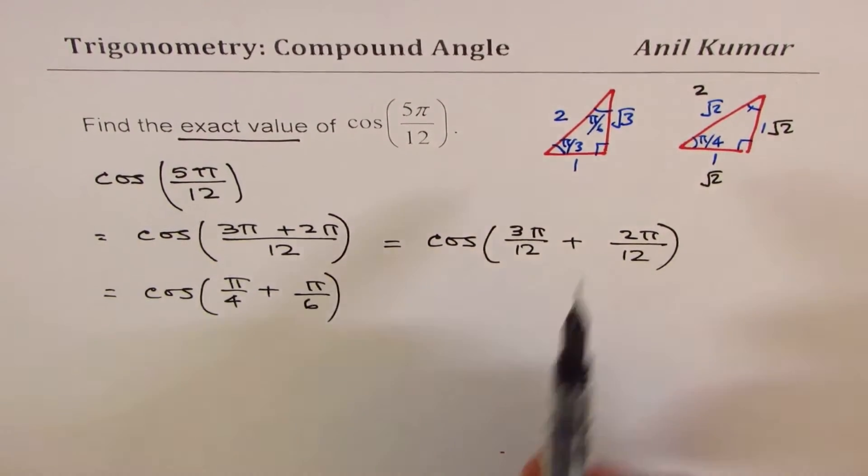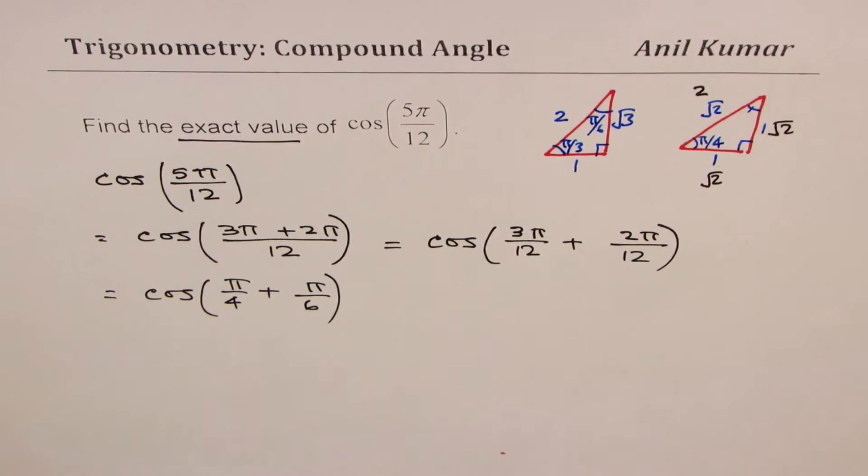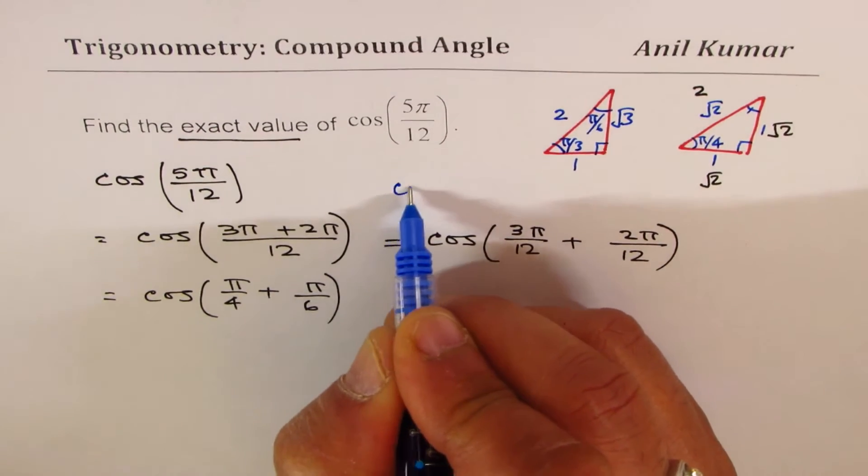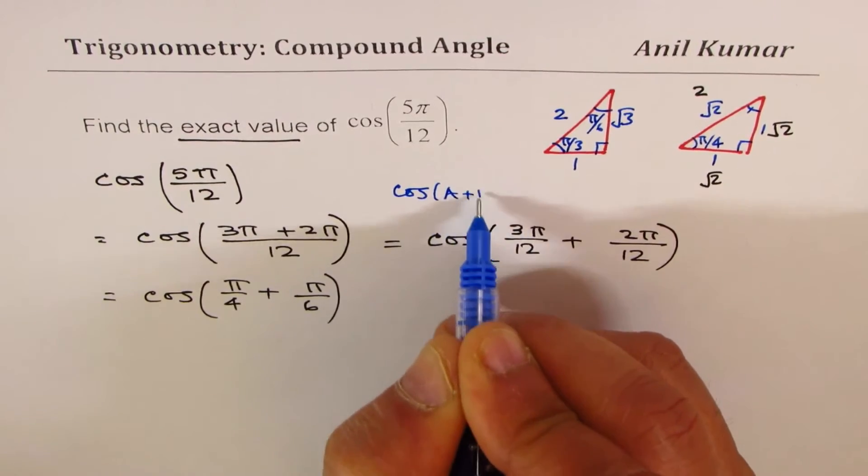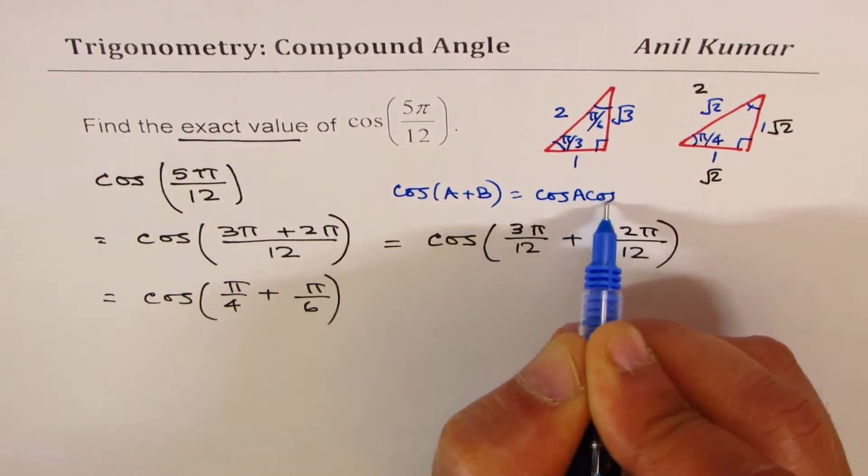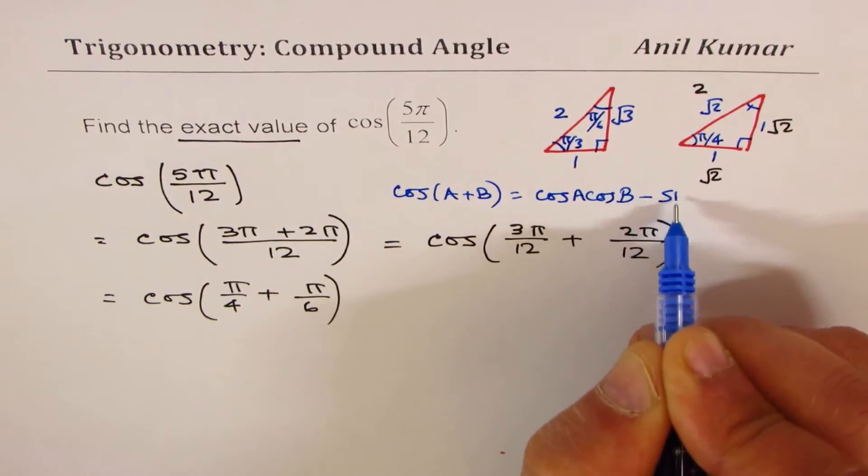So now we have those kinds of angles. It is very easy to find the value now. So we will use the cos(A+B) formula. Let me write the cos(A+B) formula just to remind you. It is cos A cos B minus sin A sin B. Correct?